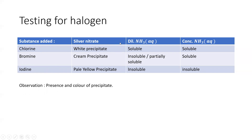Upon adding dilute aqueous ammonia to the precipitate: the white chloride precipitate dissolves in dilute aqueous ammonia. The cream bromide precipitate is partially soluble in dilute ammonia but dissolves in concentrated aqueous ammonia. The pale yellow iodide precipitate is insoluble in both dilute and concentrated aqueous ammonia — the precipitate remains. Your observation should state the presence and color of the precipitate, and whether it dissolves upon adding dilute or concentrated ammonia.